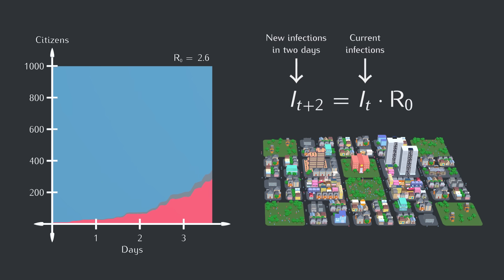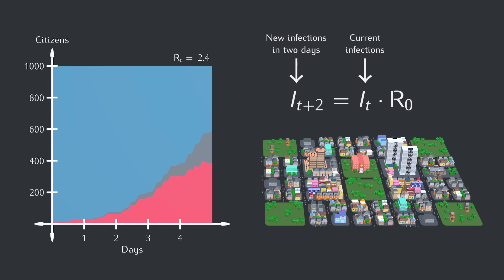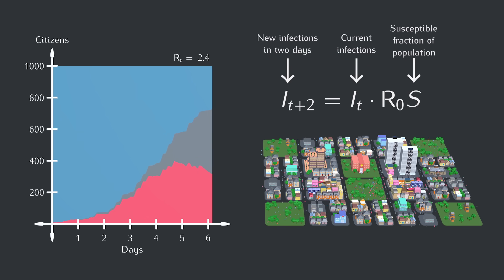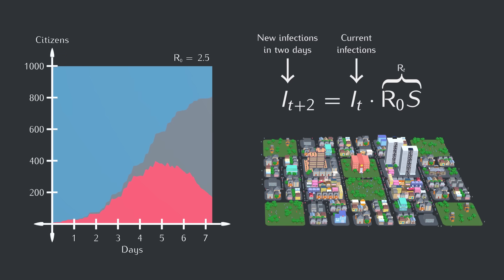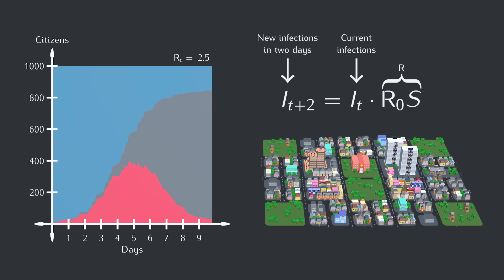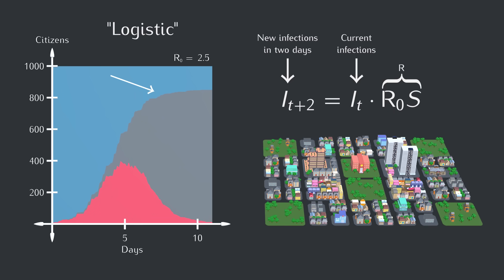As more and more blobs become infected, the growth slows down. R0 pretends that all the blobs are susceptible, but that quickly becomes untrue. So we should really add this factor S here for the fraction of blobs that actually are susceptible. R0 times S is given its own symbol — usually R, but sometimes RT. It's like R0, but for some later time when immunity is slowing things down. Instead of the basic reproduction number, R is just called the regular reproduction number. And S goes down over time, so instead of exponential growth, this becomes logistic growth, which flattens out after a while.